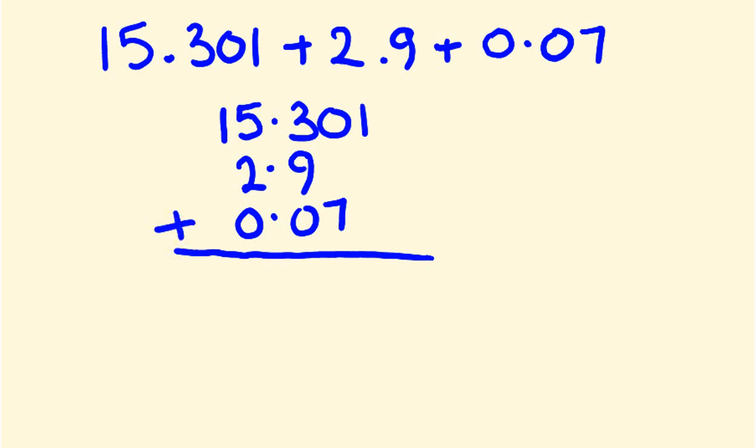Everything lines up really well so that the tenths, the hundredths, the thousandths all line up together. But you can also see that not all of these numbers have the same length—this one has tenths but doesn't have hundredths or thousandths, whereas this one does, and this one doesn't have thousandths.